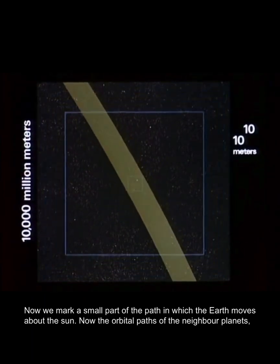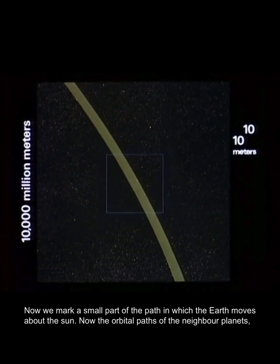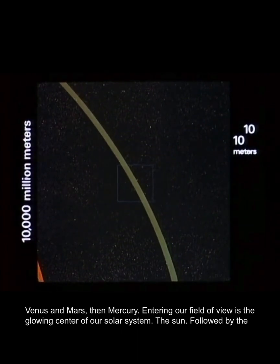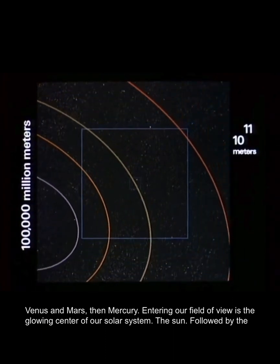Now we mark a small part of the path in which the Earth moves about the sun. Now the orbital paths of the neighbor planets Venus and Mars, then Mercury. Entering our field of view is the glowing center of our solar system, the sun.